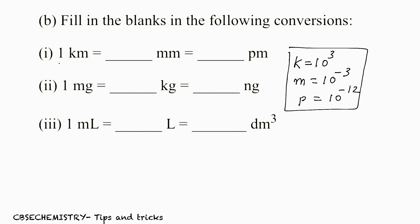The first question is 1 km is equal to ___ millimeter. I am going to explain a simple trick. What you have to do is write: 1 km is equal to 1 km. Remember, if you multiply a variable x by 1 over 1, you get x only. So if you multiply a particular number by 1 over 1, you get the same number. Our task is to replace this kilometer with millimeter.